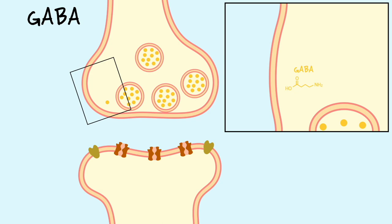Interestingly, GABA is synthesized from glutamate, and this reaction is catalyzed by an enzyme named glutamic acid decarboxylase, or simply GAD. As a noteworthy fact, for GAD to properly function, it requires a cofactor named pyridoxal phosphate, which is derived from vitamin B6. Hence, a deficiency in this vitamin could lead to problems with GABA communications in the nervous system.